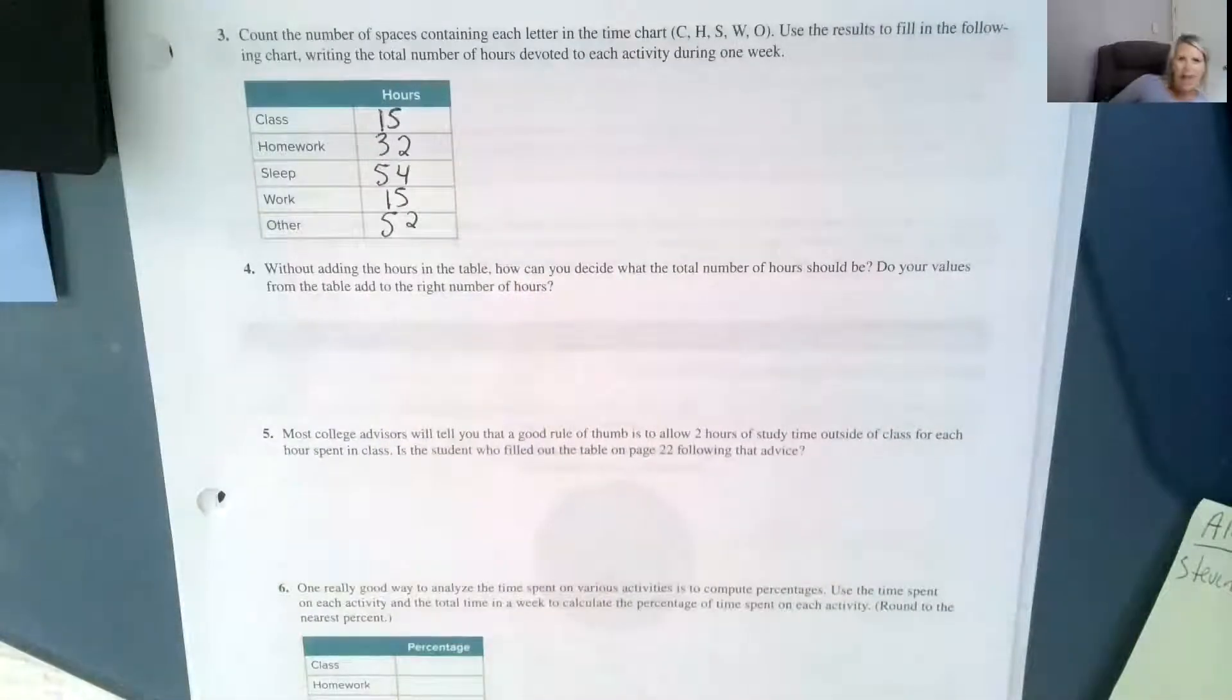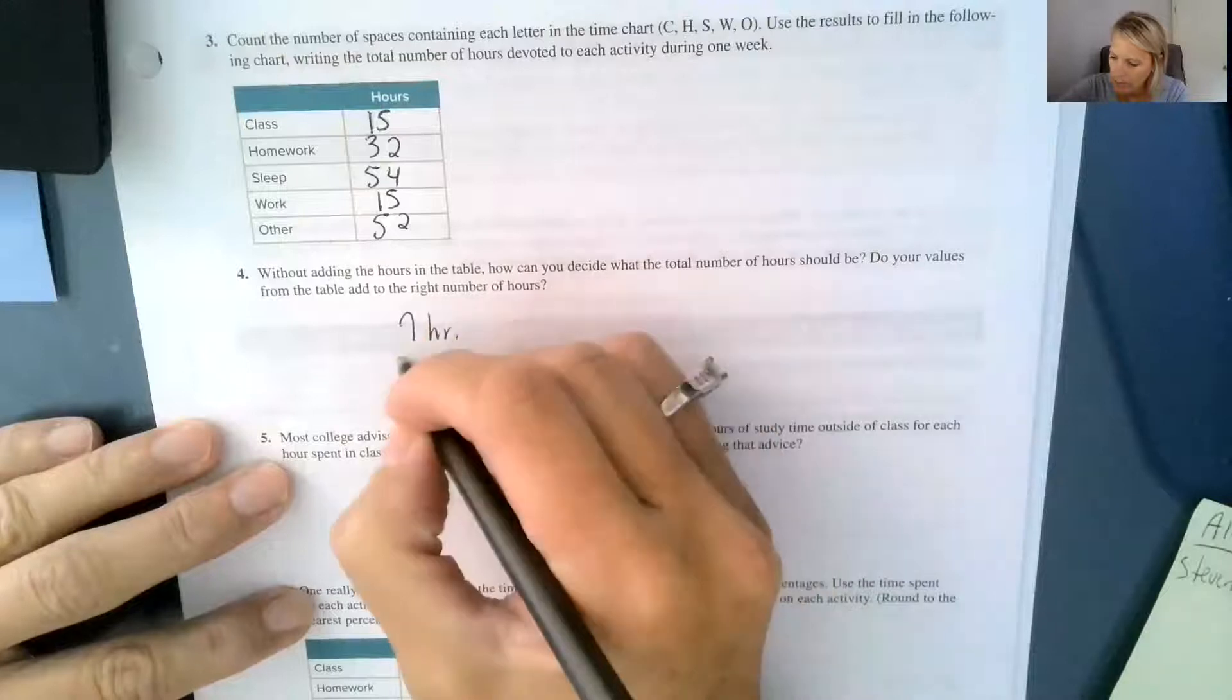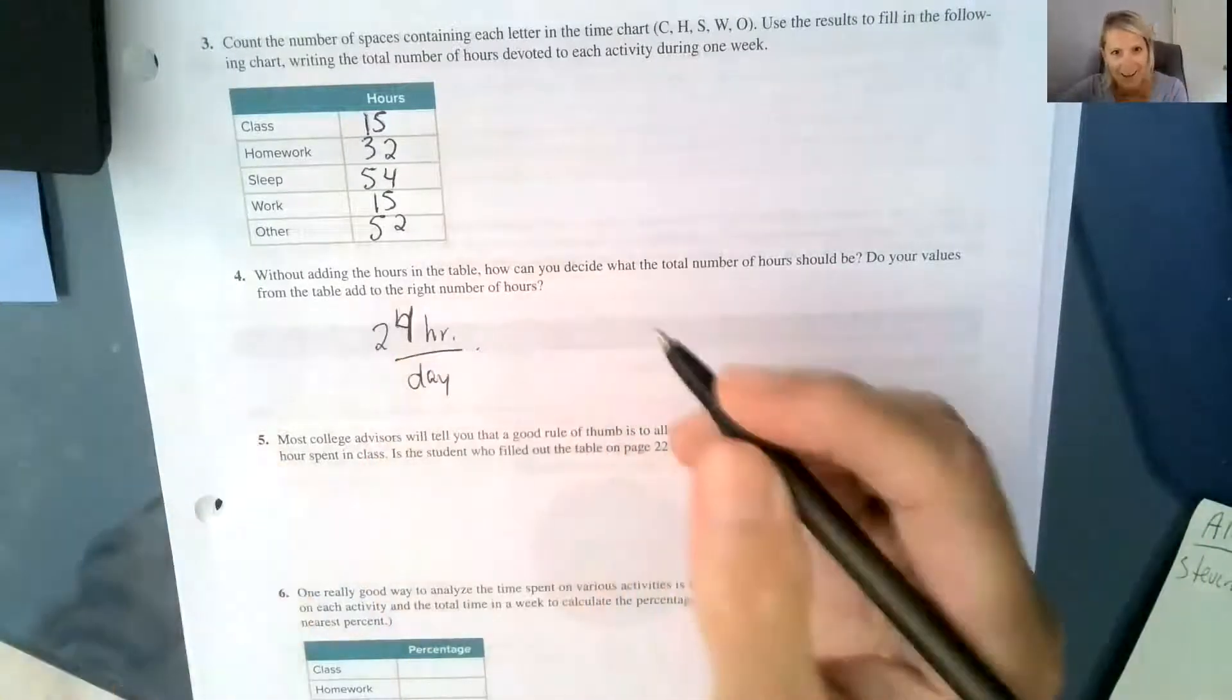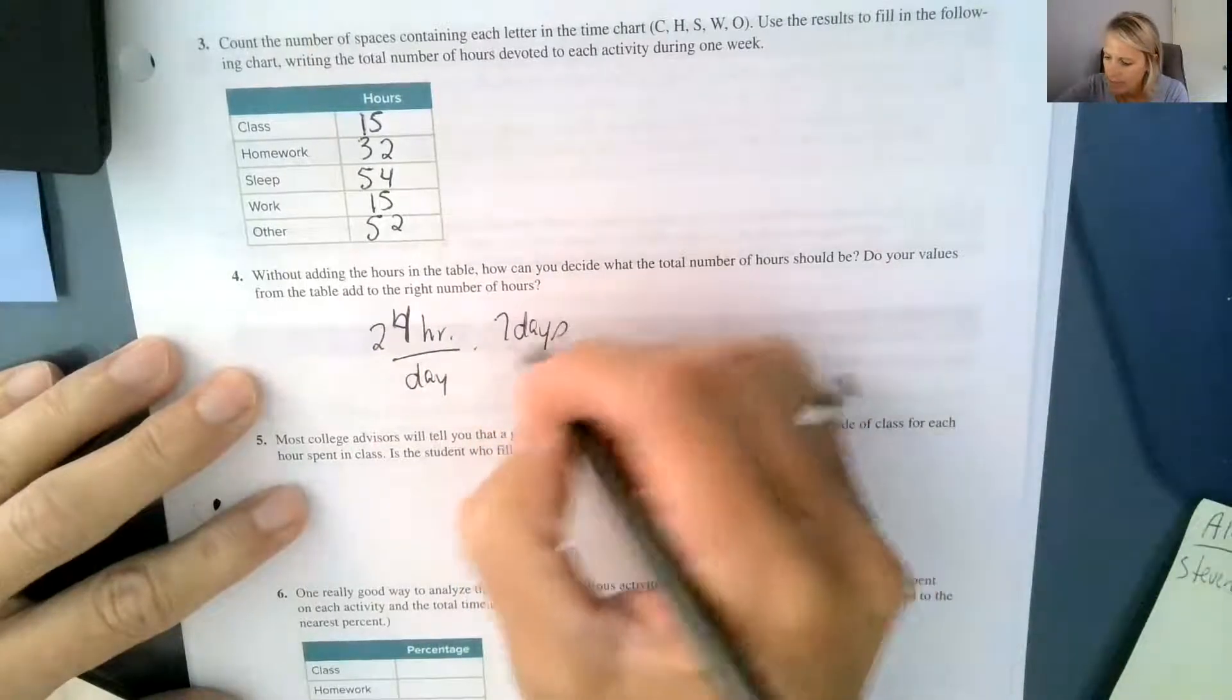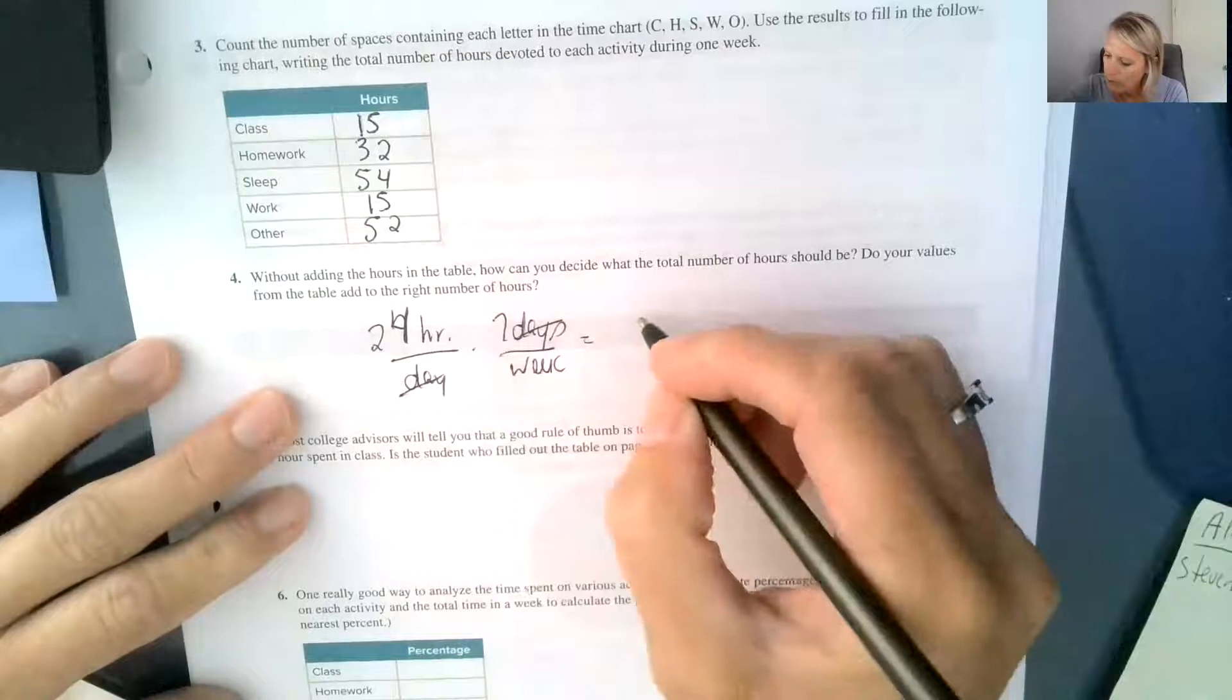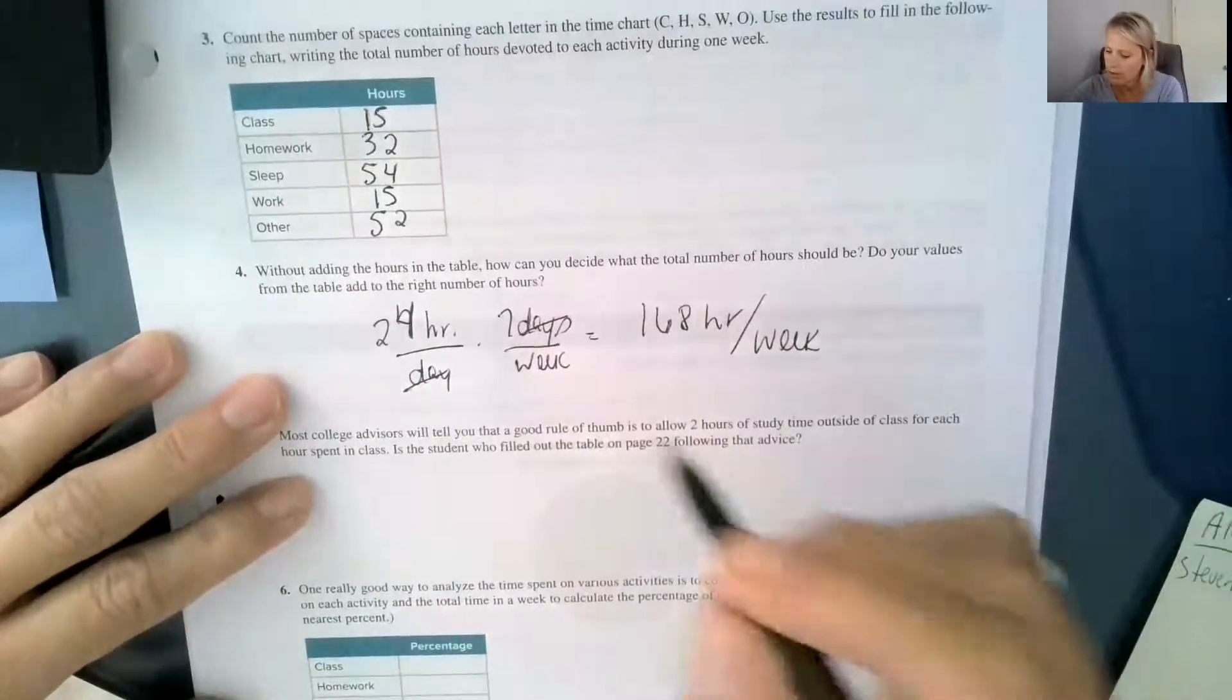So it says, without adding these up, what should it be? Well, if you have 24 hours per day available to you, and then you have seven days per week, then we can cross out our days and multiply 24 times seven, and that should be 168 hours per week. So we should have a total of 168.